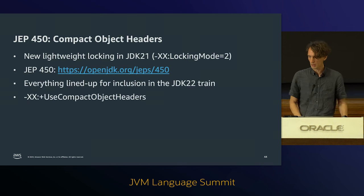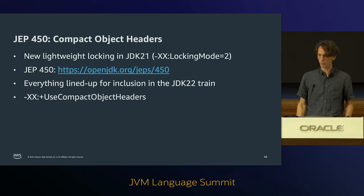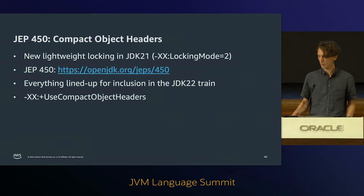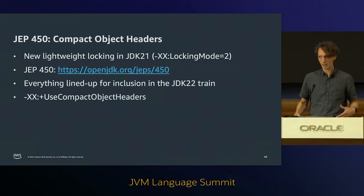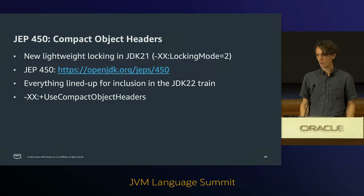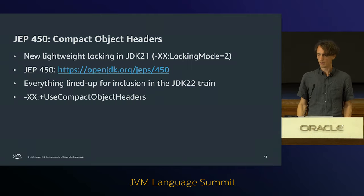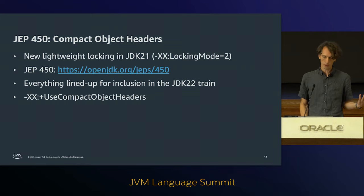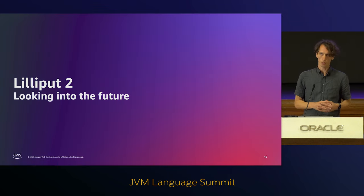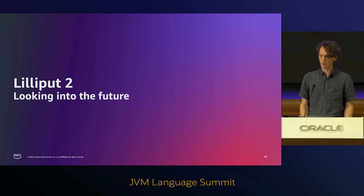We have JEP 450 - Compact Object Headers - up. We also had the new lightweight locking in JDK 21 already under a flag. All the parts are lined up for inclusion in JDK 22 - I'll basically start working on getting it reviewed and into JDK 22 when I return from JVMLS. Everything is under a flag currently, off by default. If you want to use Lilliput in JDK 22, the flag will be: -XX:+UseCompactObjectHeaders.